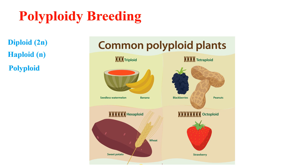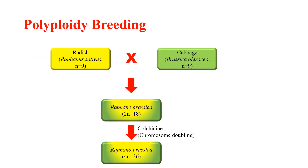Polyploidy can be induced by physical agents such as heat or cold treatment, X-rays, and chemical agents like colchicine. Some common polyploid plants are seedless watermelon, banana, blackberries, peanut, sweet potato, wheat, and strawberry. Rafanobrasica is an example of polyploid breeding — it is a hybrid developed from a cross between radish and cabbage, and polyploidy in Rafanobrasica is induced by colchicine treatment.